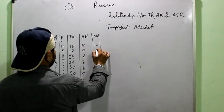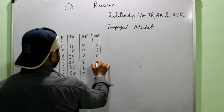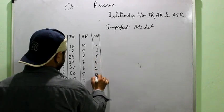So here it would be 10, then 8, 6, 4, 2, 0, minus 2.